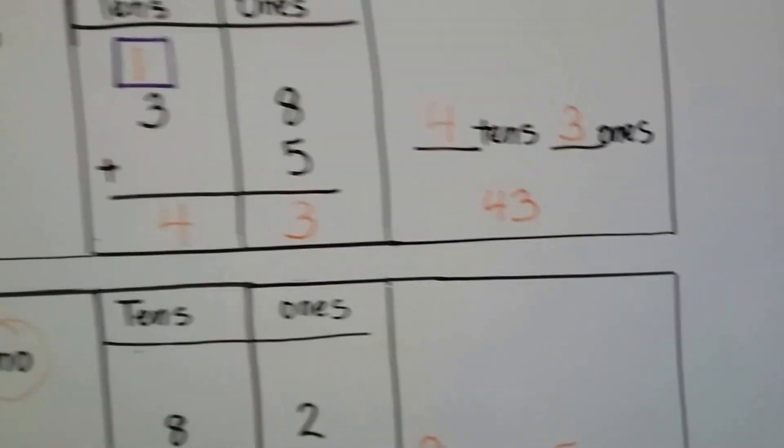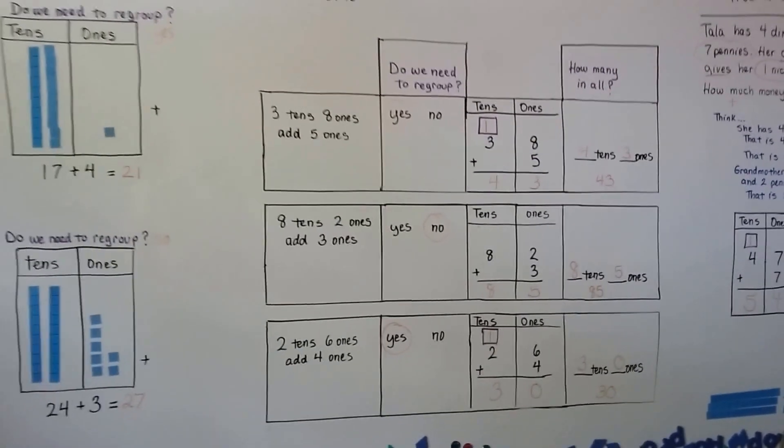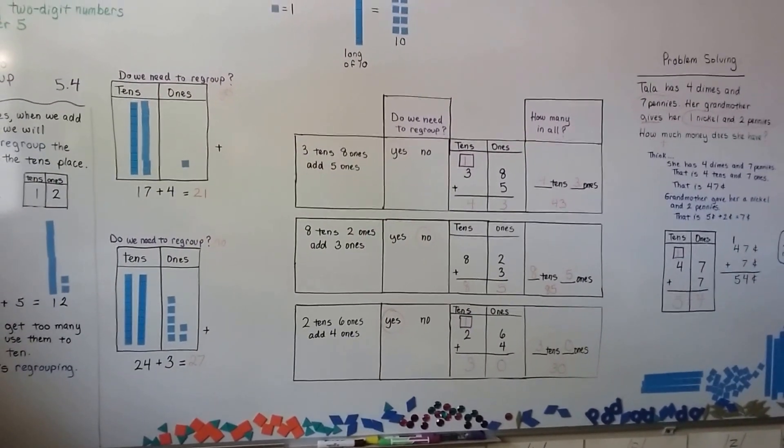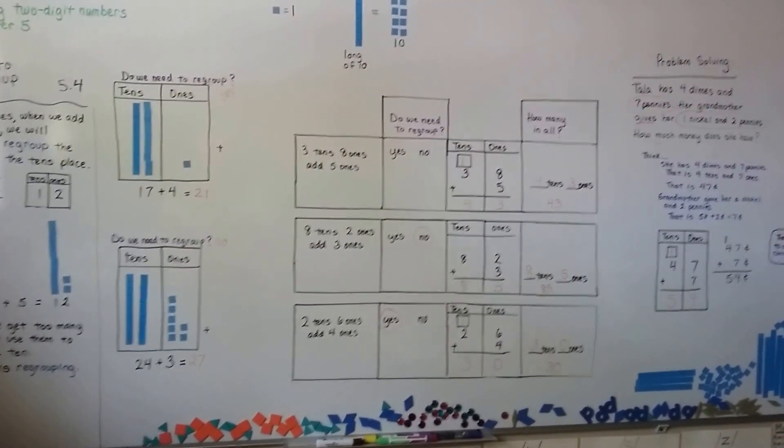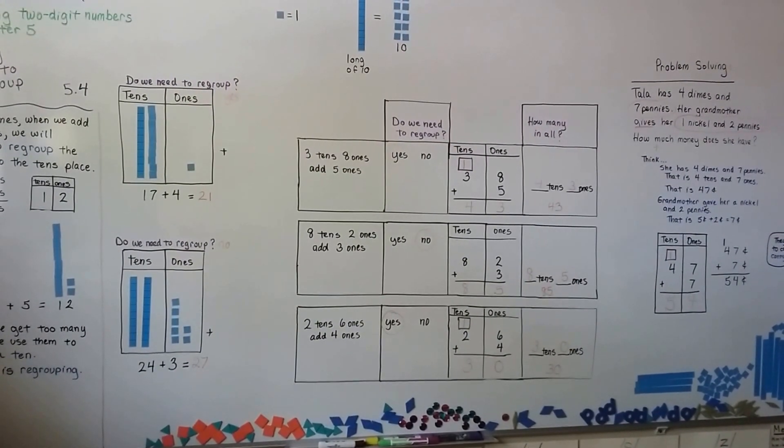See if you can try doing this on your own. Try to add two-digit numbers, and regroup your 1s to the tens column when you need to. Okay? We're going to talk about regrouping more in the next video, so I hope I'll see you there. Bye!